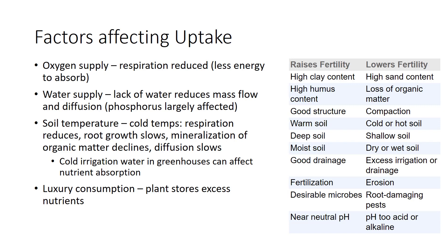In conclusion, for normal growth, most plants require 17 essential elements. Four pools of nutrients work together to both store and release nutrients to plants. Plants absorb nutrients by transporting ions into root cells. Several factors affect the absorption of nutrients.